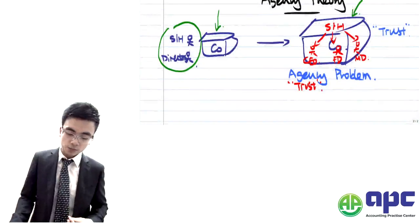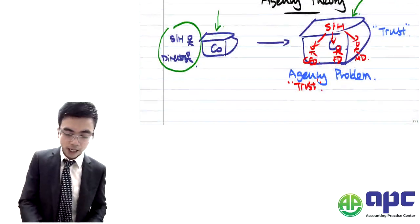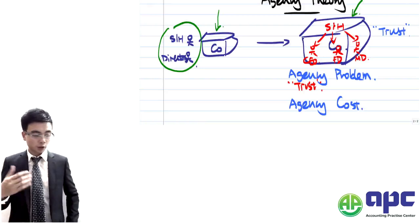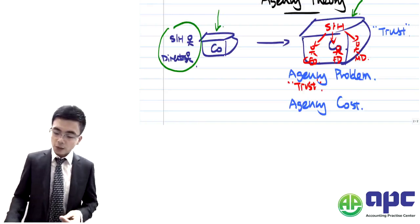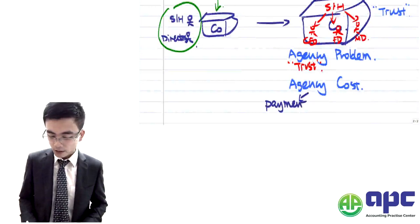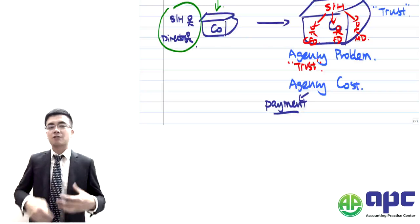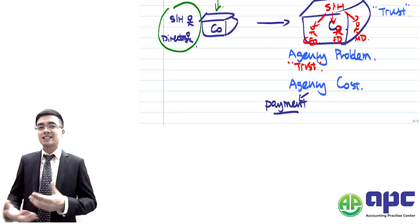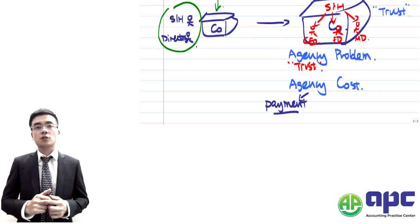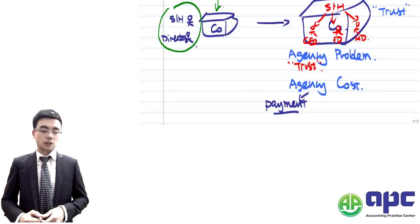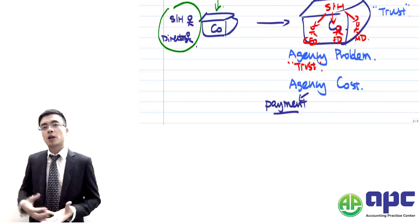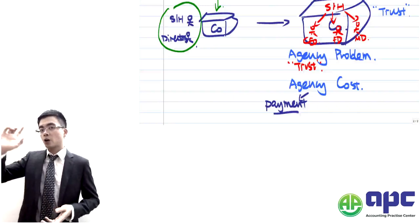How are we going to tackle the agency problem? We're going to pay the agency costs. If I'm going to employ directors, I have to make payments to them — salary, performance-related bonuses (for example, 2% of $5 million profit), a nice sports car, pension, and other benefits. That's the payment I'm going to make to those directors.